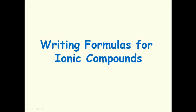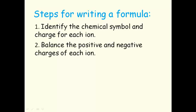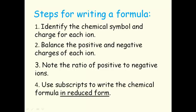Writing formulas for ionic compounds. Steps for writing a formula. Identify the chemical symbol and charge for each ion. Balance the positive and negative charges of each ion. Note the ratio of positive to negative ions. And then use subscripts to write the chemical formula in reduced form.